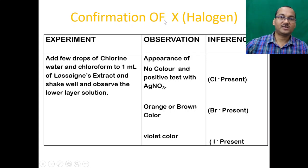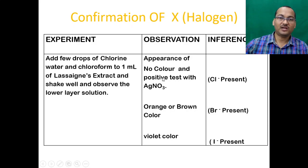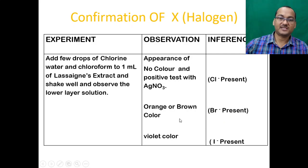For the confirmation test for halogens, add a few drops of chlorine water and chloroform to 1 ml of Lassaigne extract, shake well, and observe the lower layer. No color in the lower layer combined with a positive silver nitrate test confirms chloride. An orange or brown color in the lower layer confirms bromide. A violet color in the lower layer confirms iodide.